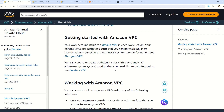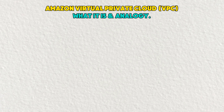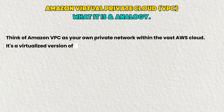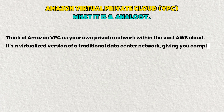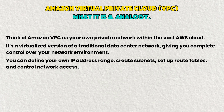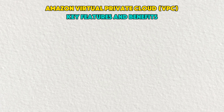Let me explain VPC in simple words. You can think of Amazon VPC as your own private network within the vast AWS cloud. It is the virtualized version of a traditional data center network, giving you complete control over your network environment. You can define your own IP address range, create subnets, set up route tables, and control network access.